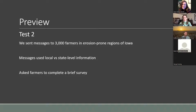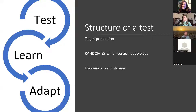Another test was sent to about 3,000 farmers in Iowa, especially in erosion-prone regions. We tested targeted information: state versus local level. We asked farmers to complete a brief survey to measure their engagement. Both tests have the same structure: we have a target population, we randomize who gets which version — we don't want farmers who've already done conservation to get one message and others to get a different one. We randomize so we know the change in outcomes is due to the difference in what they received, and we try to measure real outcomes.